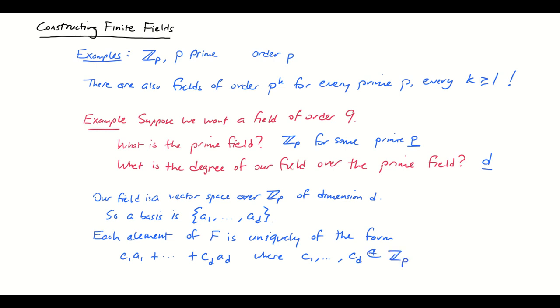c1 a1 up through cd ad where c1 through cd are elements or scalars from the base field Z mod p. So when I think about elements of my field, I'm going to be able to choose each scalar, and I have p choices for each scalar, which means the total number of choices I have for an element of f is going to be p to the dth power.